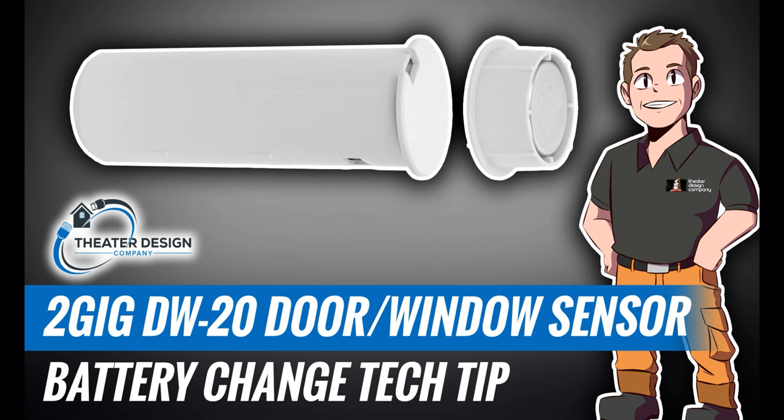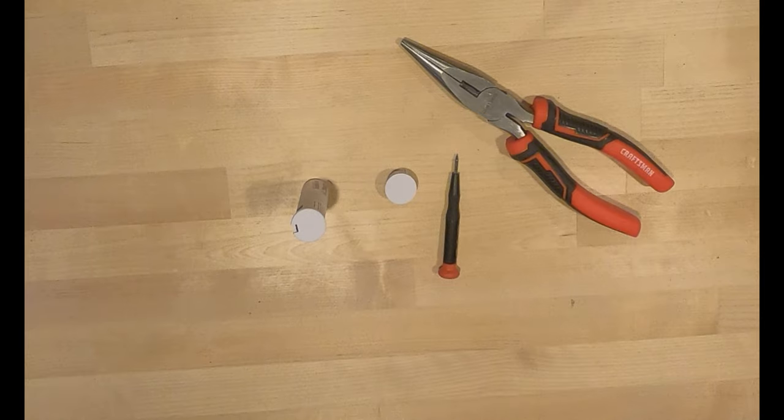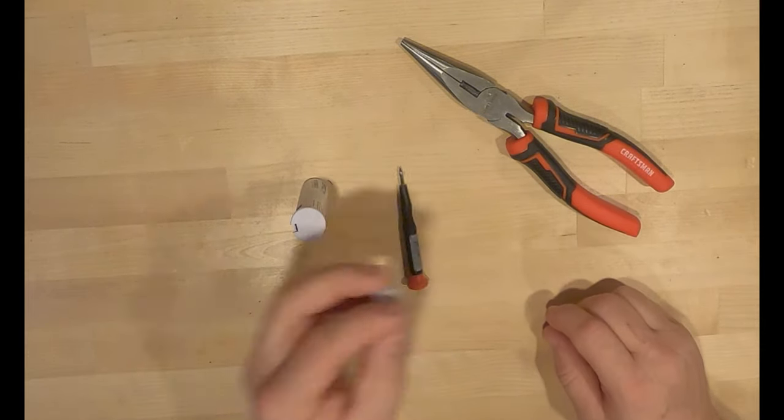Okay, so what we're working with here is the DW-20 recess door sensor. You're gonna need a flathead screwdriver and a pair of needle nose.